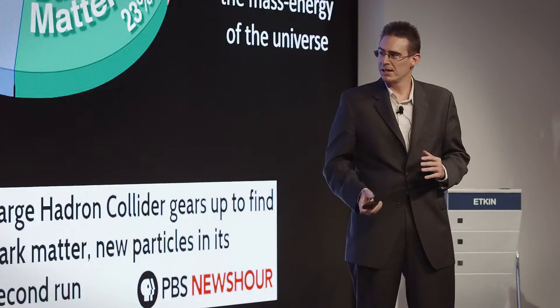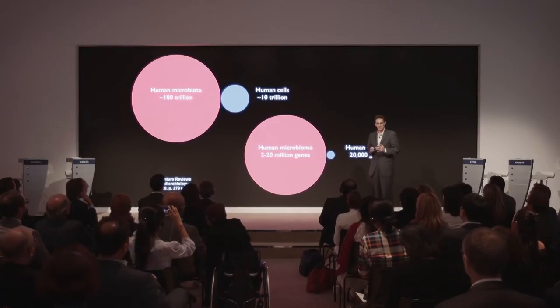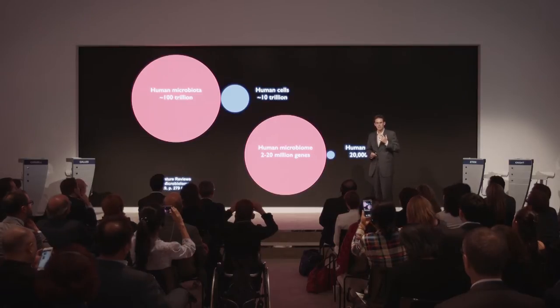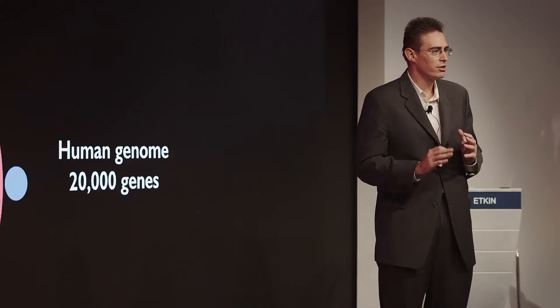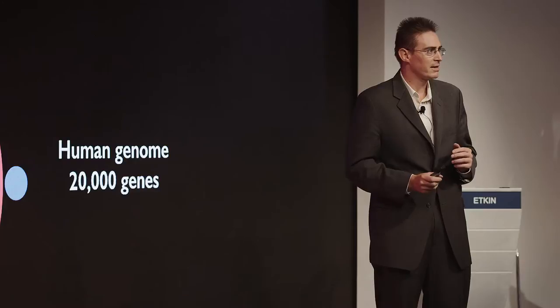Now the microbial revolution is taking this to within our own bodies. So it turns out that each of us consists of about 10 trillion cells that carry our genome that we think of as human, but we have on and inside us as many as 100 trillion microbial cells, tiny organisms too small to see with the naked eye.